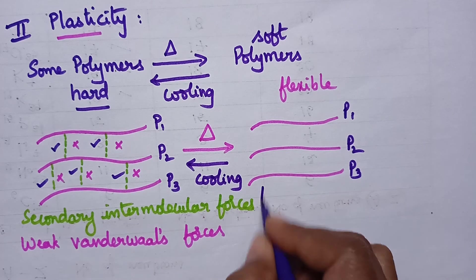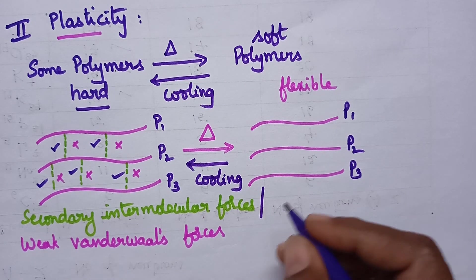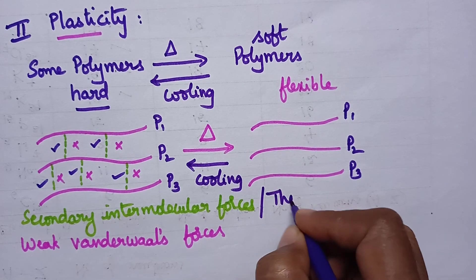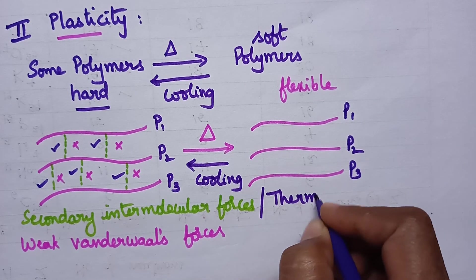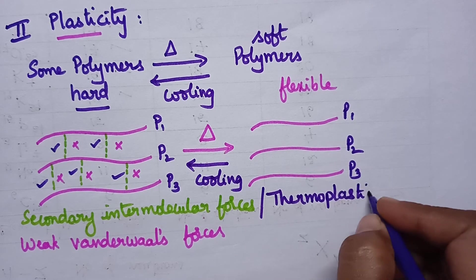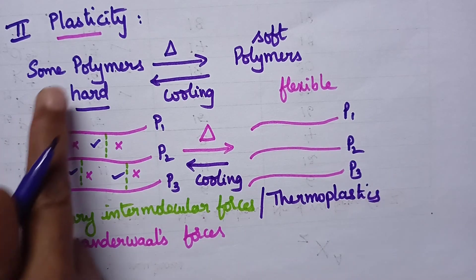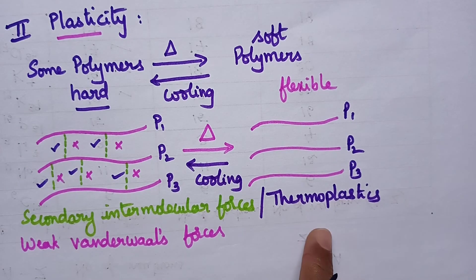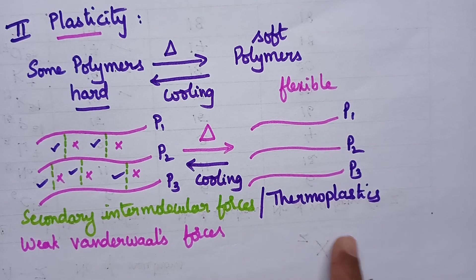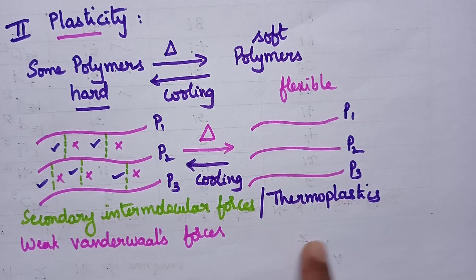This reversible property is nothing but plasticity, and it is exclusively exhibited by thermoplastics. Thermosetting plastics do not exhibit plasticity.